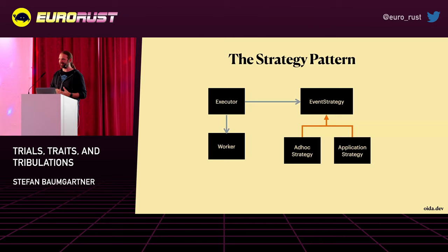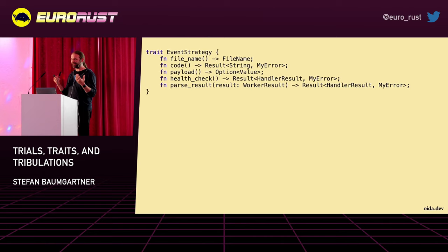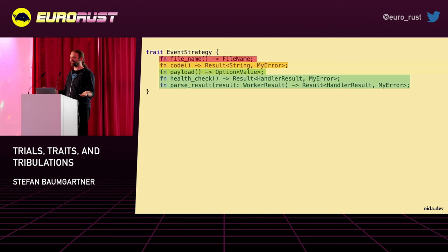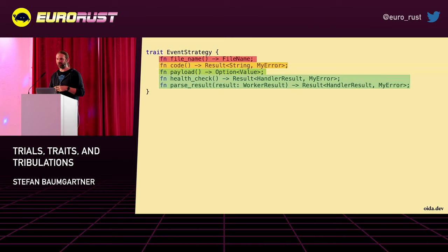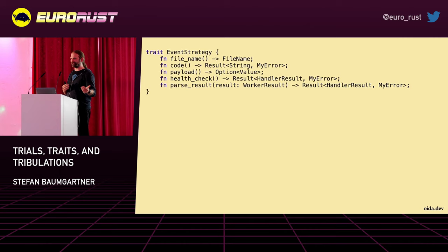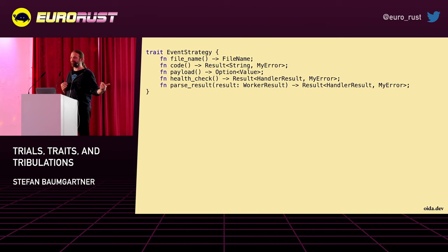I want to create a strategy pattern where I say I have this executor — it just takes care that the right things are executed but can rely on different strategies. I'm calling it EventStrategy. I model my EventStrategy and look at what I have here: I have a file_name, I have the code, I get a payload, and I can parse the result. That's what's happening — again, the same four parts, condensed in this piece that tells me what I expect from the ad hoc strategy or from the app strategy. If you remove all the colors, the methods speak to me. I understand that if I call the file_name method, I get a FileName and I will always get a FileName, because it's not wrapped in a result or an option. I can't be sure that I get code — this might error — but if I get code it's of type String. Suddenly I understand a lot more about what's going on in both strategies without needing to parse every line of code.